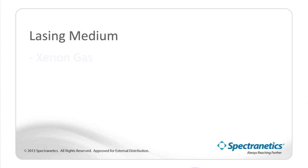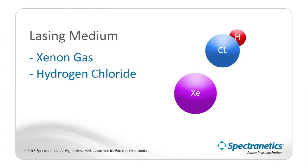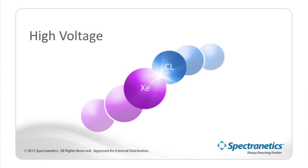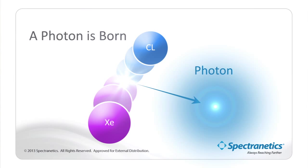The lasing medium used when performing laser atherectomy is a mixture of xenon gas and hydrogen chloride. This mixture is then bombarded by extraordinary voltages, and we get a xenon chloride molecule. As we continue to bombard with extraordinary voltages, the electrons jump in orbit, circulating in an unstable orbit. When they do this, they release a packet of light — a photon — and that is how all laser light is generated.